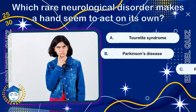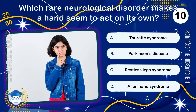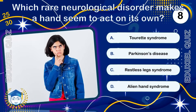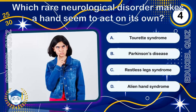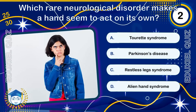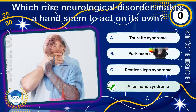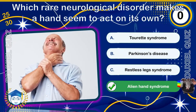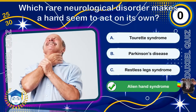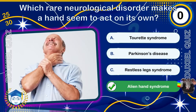Which rare neurological disorder makes a hand seem to act on its own? Alien hand syndrome is a rare neurological condition where one hand seems to act independently of the person's will. It is often associated with damage to the corpus callosum or frontal lobes. Patients may find their hand performing unintended actions, like unbuttoning clothes.